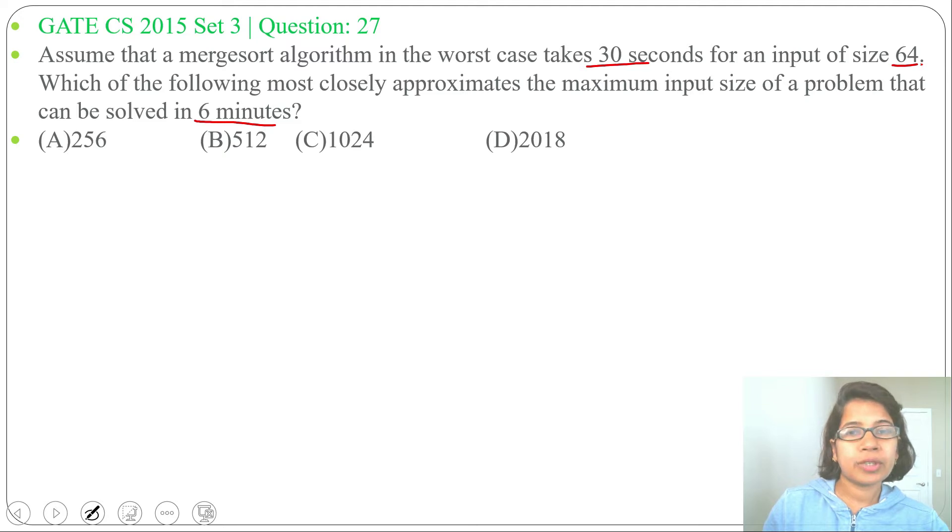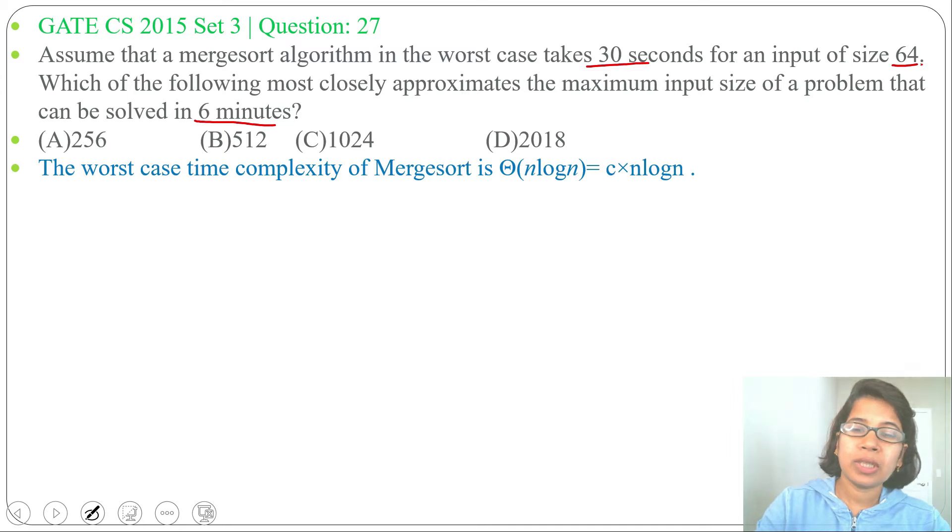We know worst case running time for Mergesort is Θ(n log n). In fact for Mergesort, its best case, average case, and worst case all are Θ(n log n). So Θ(n log n) we can write as C × n log n, where C is some constant, and this C × n log n equals to 30 seconds. This n value is 64, so we need to find the C value.